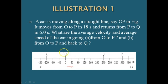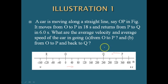The car is moving from O to P in 18 seconds and it returns from P to Q in 6 seconds. What are the average velocity and average speed of the car in going from O to P, and from O to P and back to Q? In these two cases, what is the average velocity as well as average speed?